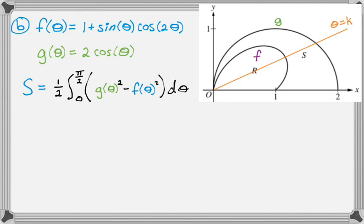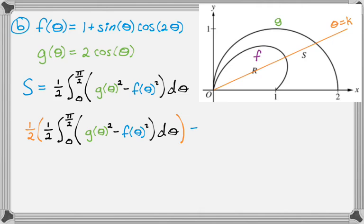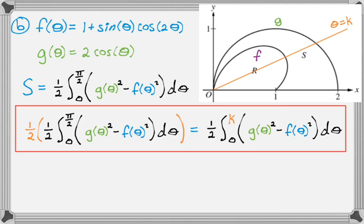So I'm going to do 1 half of S. So instead of writing S, for some reason I decided to rewrite that integral. So there you go. So that's 1 half of S. And that has to be equal to 1 half, the integral from 0 to k, of the exact same integrand. So it's the larger radius squared minus the smaller radius squared. So that will definitely do it.